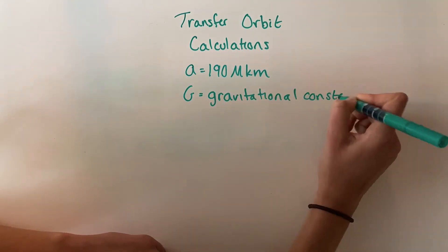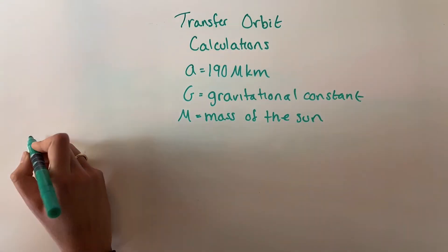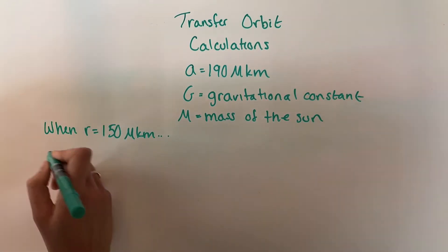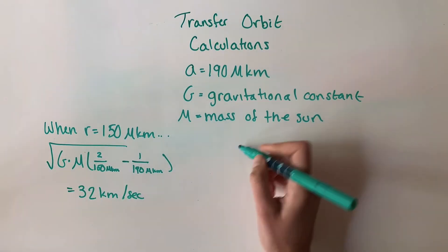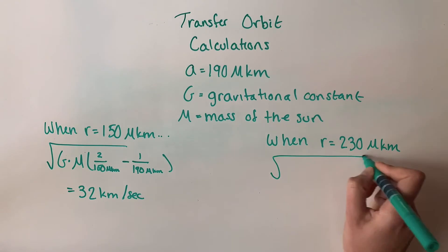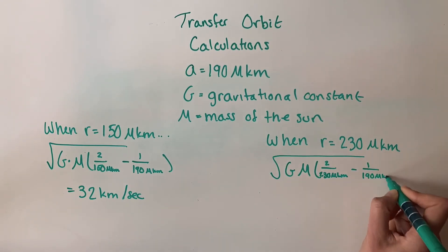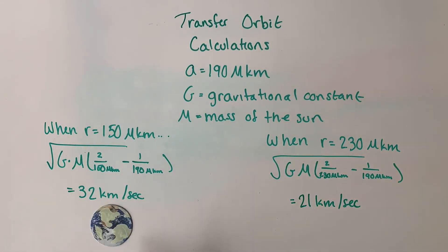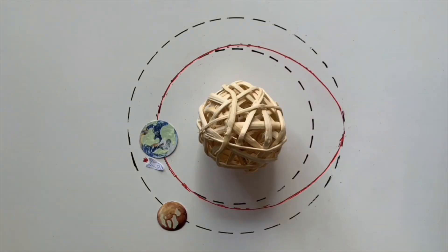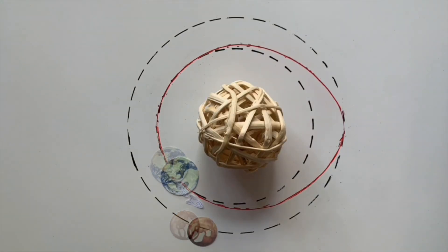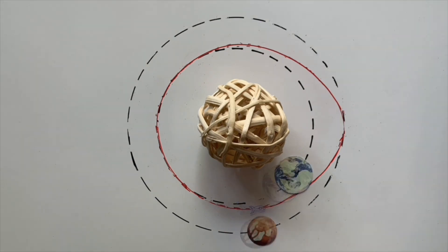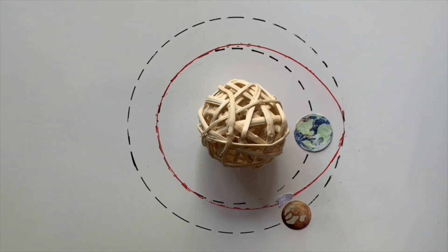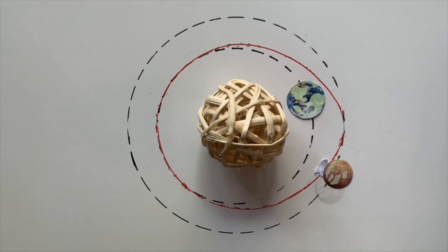But what about the transfer orbit? We can use the Vis-Viva equation to find the velocity of a spacecraft traveling anywhere along the transfer orbit, but we really care about the orbital speed at two key points — at Earth and at Mars. The spacecraft needs to acquire a speed of 32 kilometers per second to enter the transfer orbit, and it will arrive at Mars at a speed of 21 kilometers per second. That means our two changes in velocity will be an increase of 3 kilometers per second when leaving Earth, and another increase of 4 kilometers per second when arriving at Mars. Now we have all the data we need to fire up those engines and transfer orbits from Earth to Mars using as little fuel as possible.